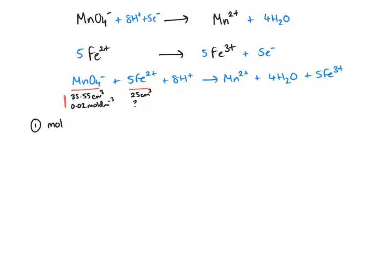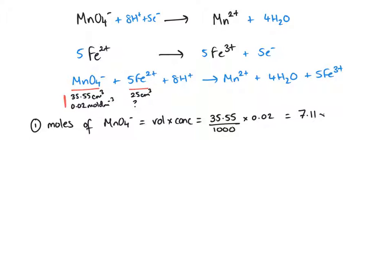We'll work out the moles of manganate. We're going to do volume times concentration, and remember the volume needs to be in dm³, so it needs to be divided by 1000. That gives us 7.11 × 10⁻⁴ moles.